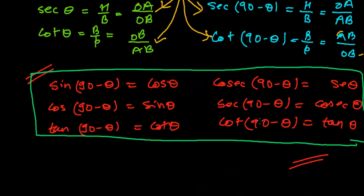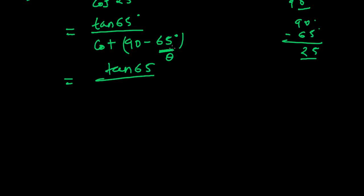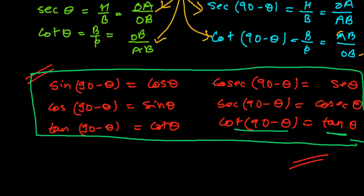See our relationships. We find here that cot(90° - θ) is equal to tan θ. And in this equation, θ is equal to 65. So we can see cot(90° - 65°) will be equal to tan 65°.